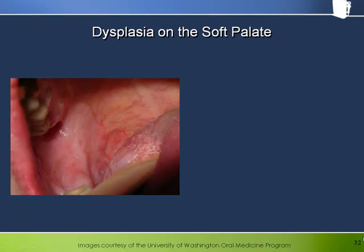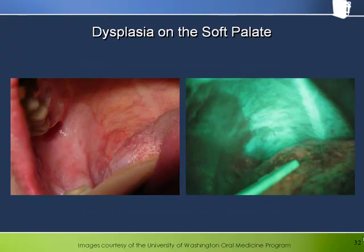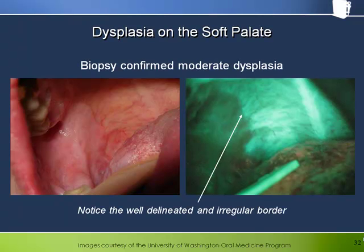This is an example of a large area of leukoplakia on the soft palate that was confirmed by biopsy to be moderate dysplasia. Under Velscope, the leukoplakia presents as a dark area in stark contrast to the adjacent healthy tissue on the soft palate. Notice in particular the well-delineated and irregular border of the dark region. This is typical of dysplasia and oral cancer.